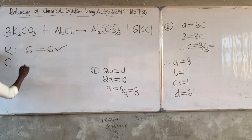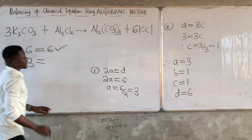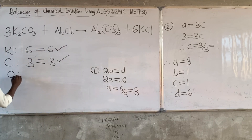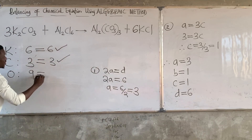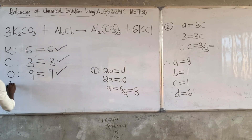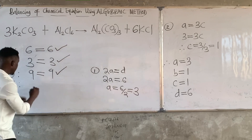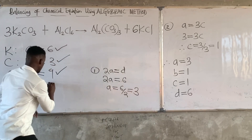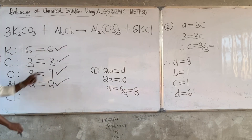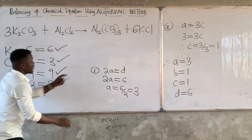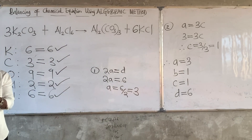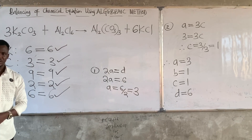Carbon: 1 times 3 is 3 on the left, 1 times 3 is 3 on the right — carbon is balanced. Oxygen: 3 times 3 is 9 on the left, 3 times 3 is 9 on the right — oxygen is balanced. Aluminum is 2 on the left and 2 on the right — balanced. Chlorine is 6 on the left and 6 on the right — balanced. So we have a well-balanced chemical equation. Thank you very much.